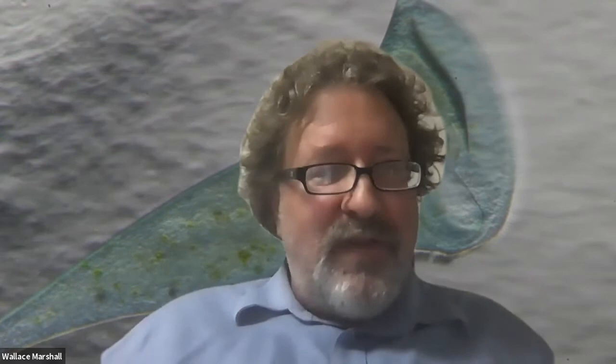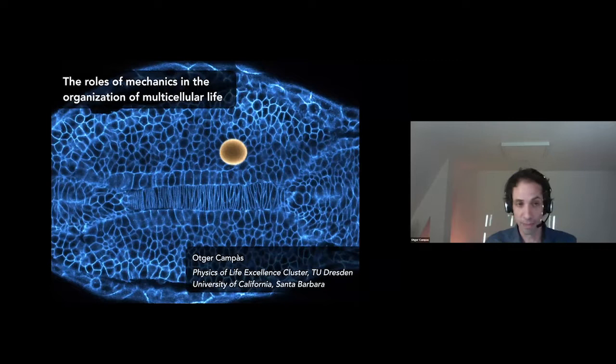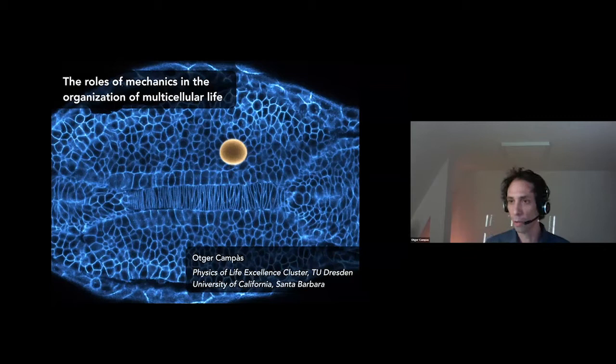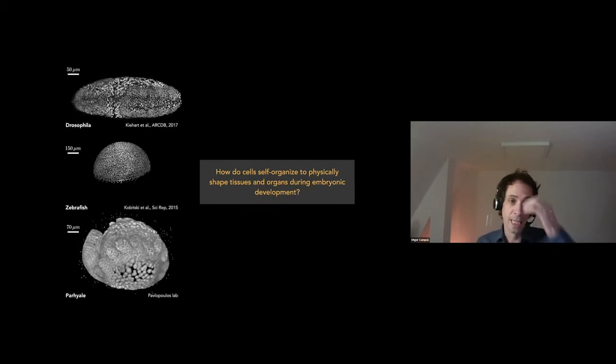Hello, everyone. Let me start by thanking the organizers for the invitation. Yesterday we saw many different aspects of multicellular life. Today, I want to touch upon a different aspect that was mentioned but not really covered: the role of mechanics in the organization of multicellular organisms. In my talk I'm going to focus on animal species. In my group, we're interested in how cells self-organize to build functional structures — tissues, organs, and so on — during embryonic development.